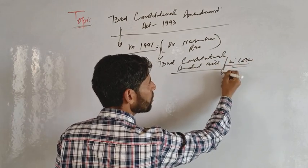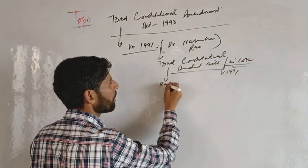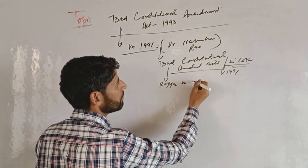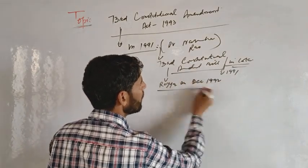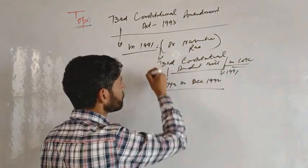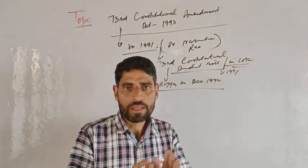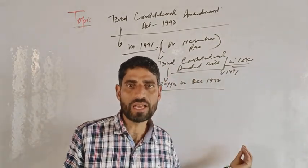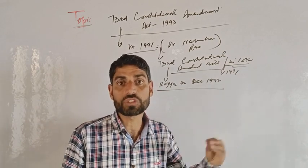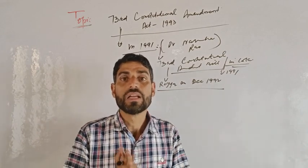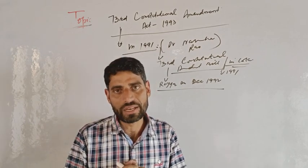The 73rd Constitutional Amendment Bill was introduced in the Indian Parliament by Prime Minister P.V. Narasimha Rao, with the purpose of strengthening Panchayati Raj institutions in India.